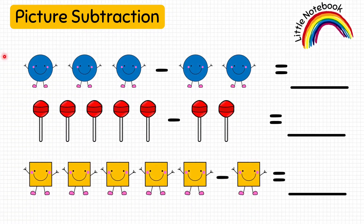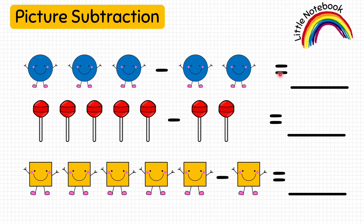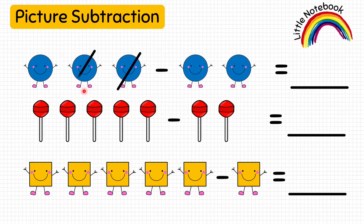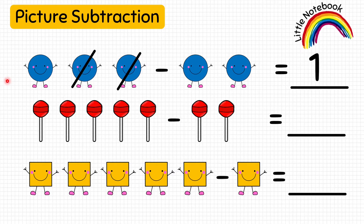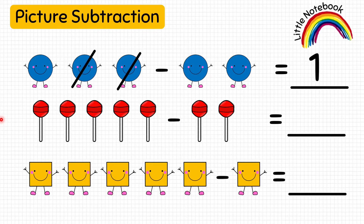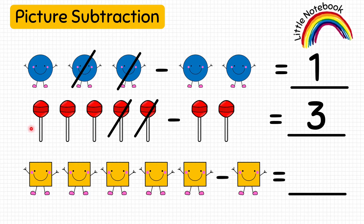Now let's solve the next question: three circles minus two circles equals how many circles? Let's cross two circles — one, two. How many circles are we left with? Only one, so our answer is one. Three minus two equals one. Next question: five lollipops minus two lollipops equals how many lollipops? Let's cross two lollipops — one, two. We are left with three lollipops, so our answer is three. Five minus two equals three.